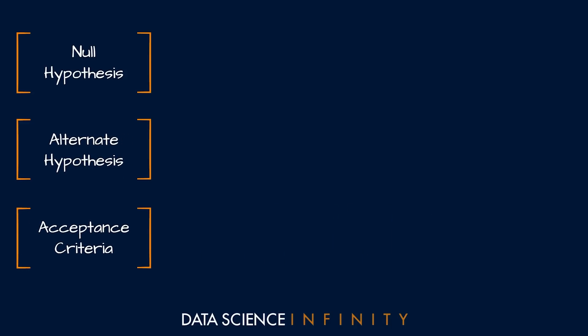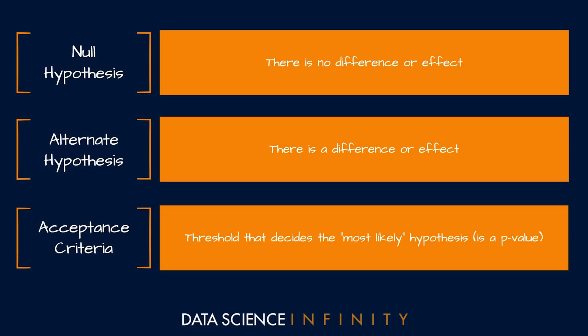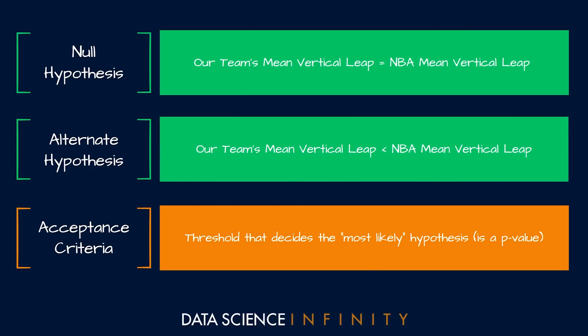On screen you can see the template definitions for each of these that we discussed in the last video. In the case of our specific question around whether the mean vertical leap of our team is lower than the mean vertical leap of all players in the NBA, our null hypothesis is that there isn't evidence to support that it's lower — so our team's mean vertical leap is equal to the overall NBA mean vertical leap, meaning there isn't any difference between the two. Our alternate hypothesis is what we're testing for: that our team's mean vertical leap is actually lower than the overall NBA mean vertical leap.